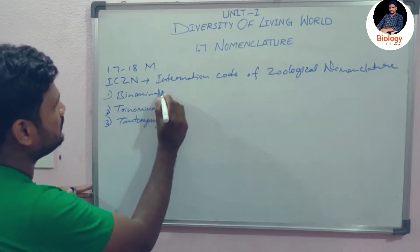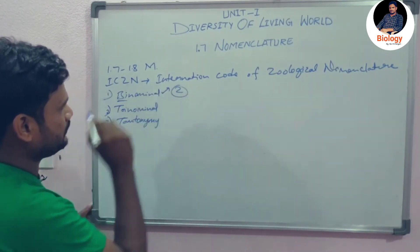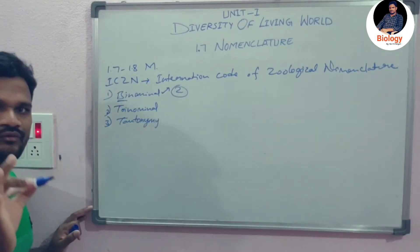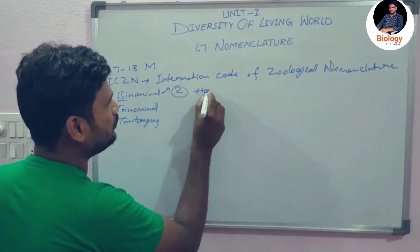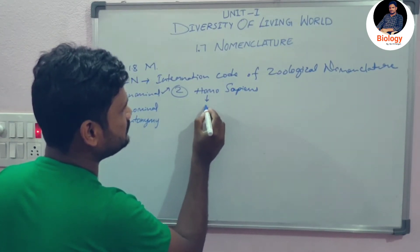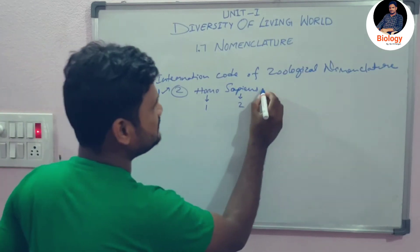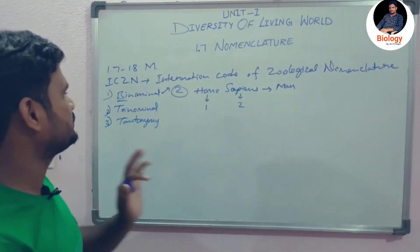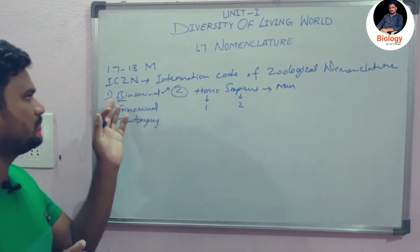First, let's see binomial nomenclature. 'Bi' means two, which means according to this process we have to give two words to the organism — a two-worded name. For example, Homo sapiens. In this we have two words: the first word and the second word. Homo sapiens is the scientific name of a human. So binomial nomenclature means the name should contain two words.